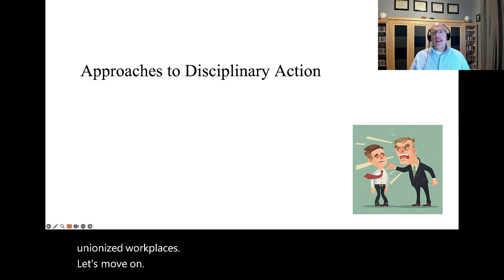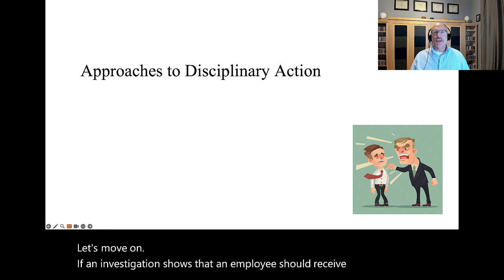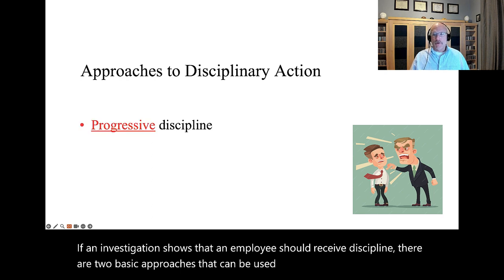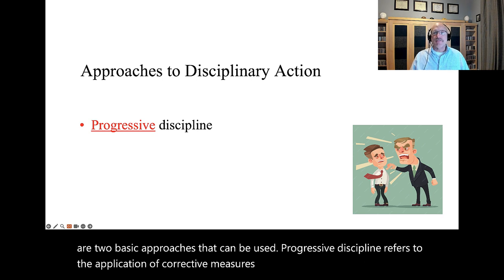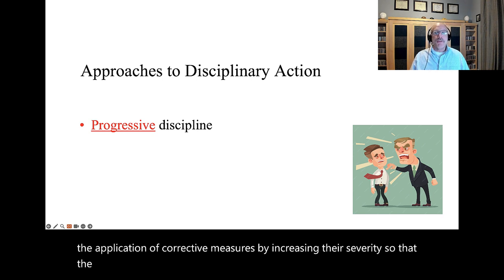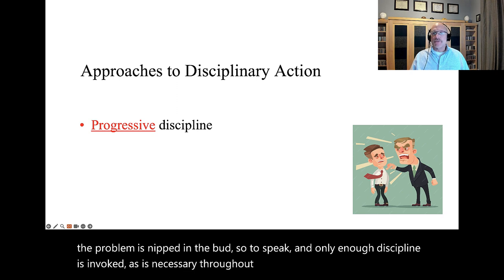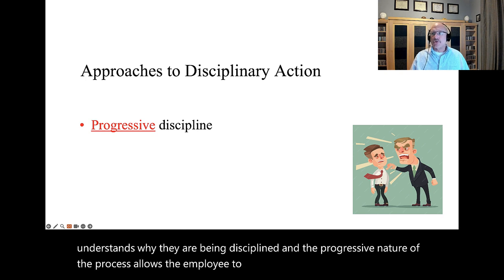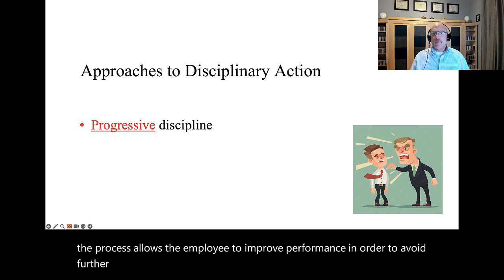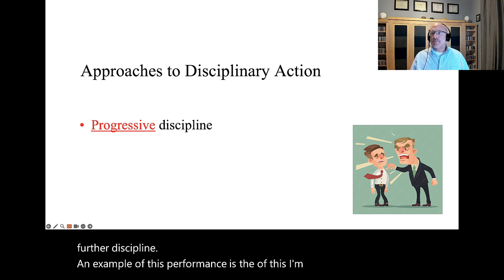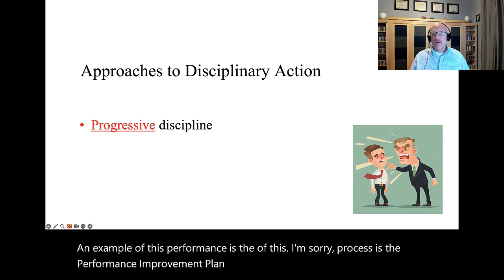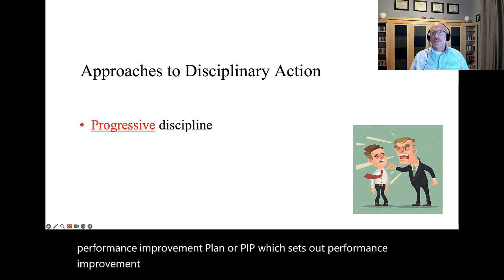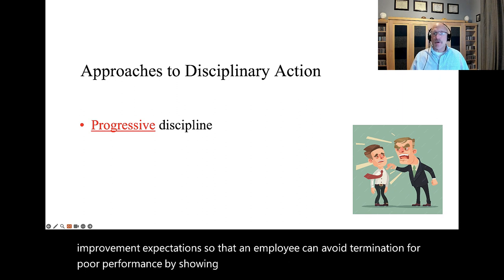If an investigation shows that an employee should receive discipline, there are two basic approaches that can be used. Progressive discipline refers to the application of corrective measures by increasing their severity so that the problem is nipped in the bud, and only enough discipline is invoked as is necessary. Throughout this process, the employee understands why they are being disciplined, and the progressive nature of the process allows the employee to improve performance in order to avoid further discipline. An example of this process is the performance improvement plan, or PIP, which sets out performance improvement expectations so that an employee can avoid termination for poor performance by showing improvement during a probationary period.